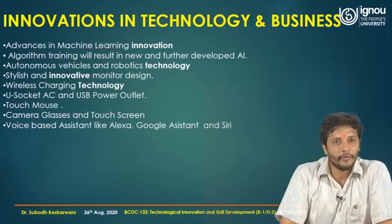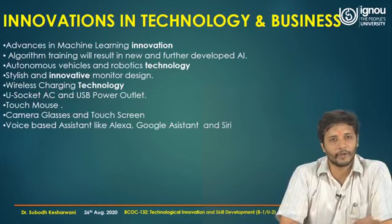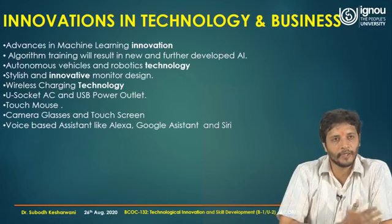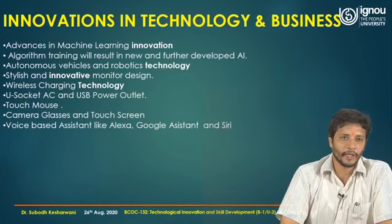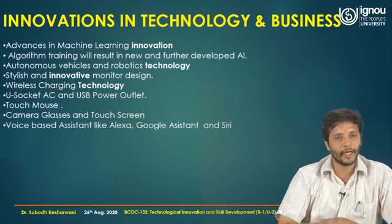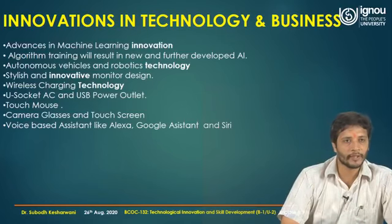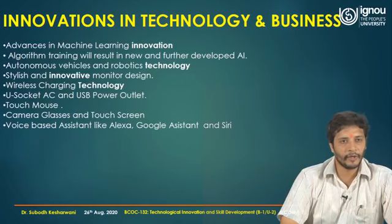In technological business innovation, certain changes have come up — advances in machine learning, algorithm training resulting in new AI, autonomous vehicles, and robotics technologies. The whole world is talking about the Industry 4.0 model, which includes a paradigm shift from fuel cars to electric cars, run by robots or by the internet. This is an era of autonomous vehicles. Some industries and players have revamped themselves, while organizations that have not tried to adapt technology or innovation are in trouble and will be out of the picture.